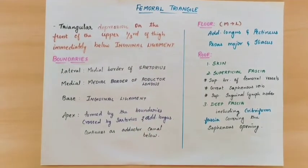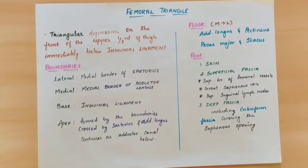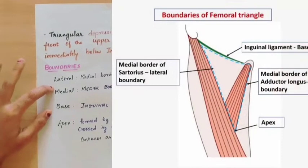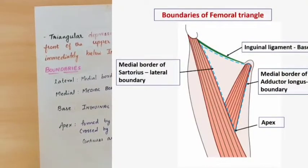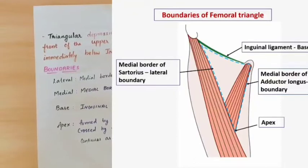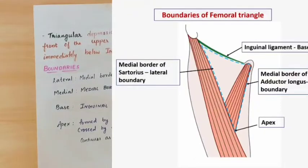Now we will see the boundaries. There is a triangle — what are the boundaries? What is the lateral side? What is the medial side? What is the base? What is the apex? On the lateral side, as you can see in the diagram, it is made by the medial border of the sartorius muscle. The medial side is the medial border of the adductor longus muscle. So both are medial borders — sartorius muscle medial border on the lateral side, adductor longus medial border on the medial side.